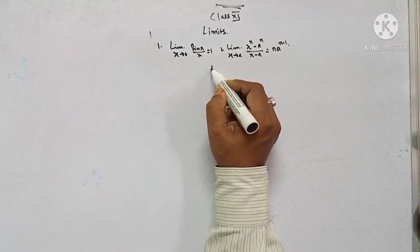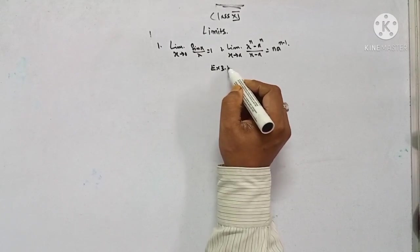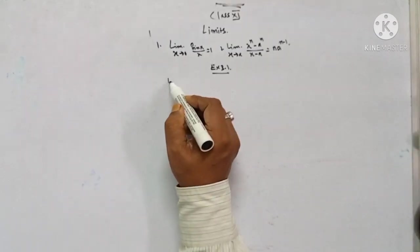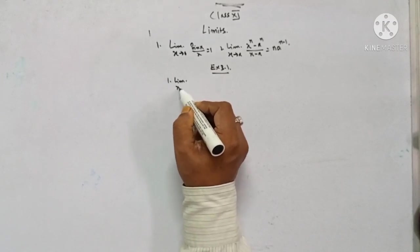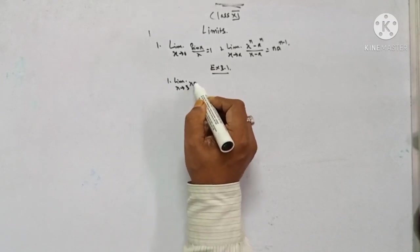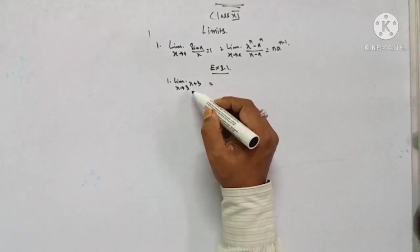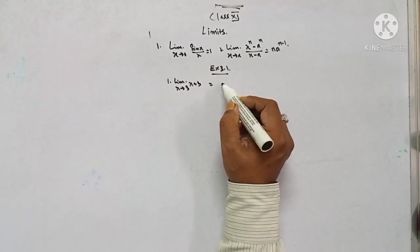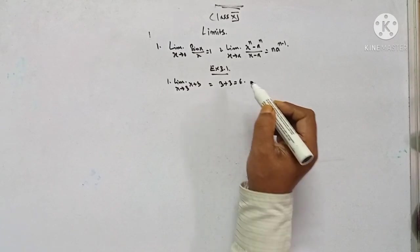Exercise 3.1, question 1: limit x tends to 3 of (x + 3). Simply place the value 3 — so 3 plus 3 equals 6.